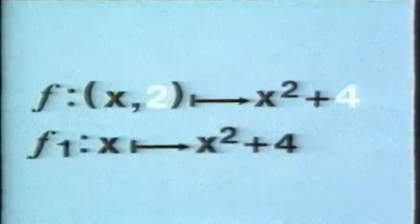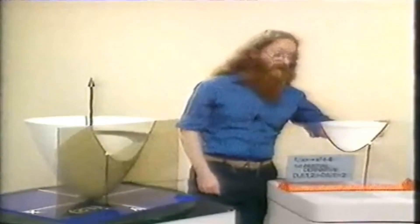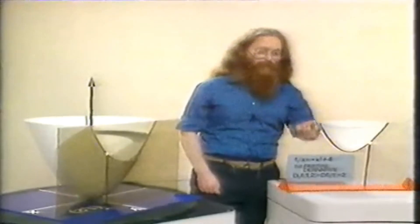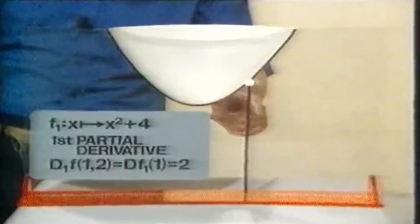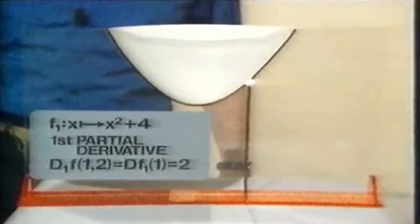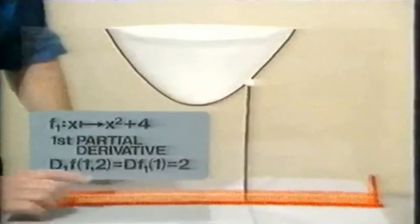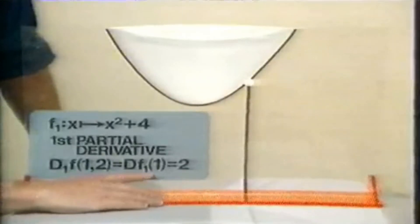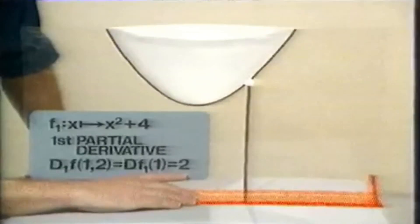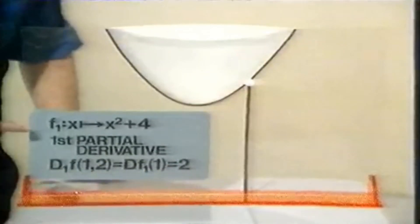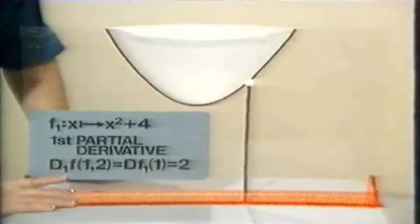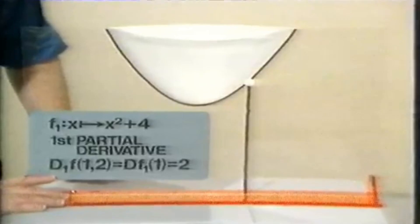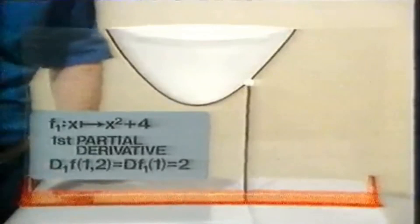f₁ takes x to x² + 4. Here's the graph of x² + 4. Since we're interested in the behavior of the surface above the point (1, 2), we're interested in the behavior of this graph when x = 1. Since we're interested in differentiation, we're interested in the slope of the tangent line there. The slope of the tangent is given by the value of the derivative of this function when x = 1, and we can easily calculate this value — it's 2. We call this the value of the first partial derivative at the point (1, 2), and we write it with the 1 next to the d to remind us that we're differentiating a function of the first variable x.